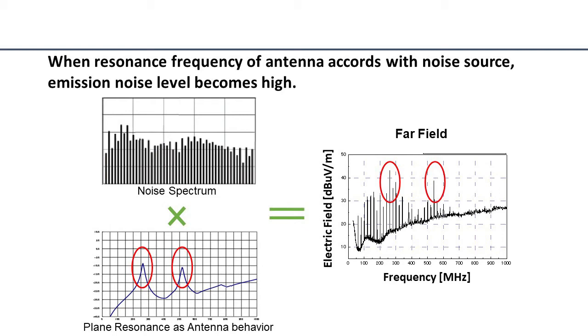Regarding noise source, ICs and high-speed signal traces are dominant noise factors. But there is a limitation to suppress the noise source factor. Regarding antenna factor, a pair of power and ground plane is one of the large antennas in PCB and its factor is controllable.